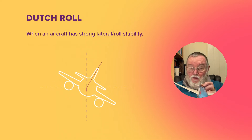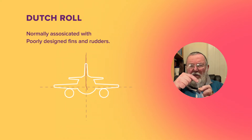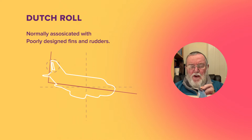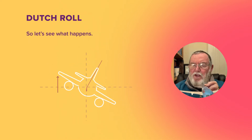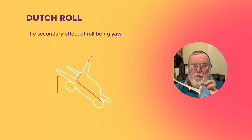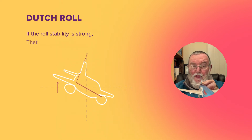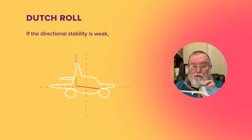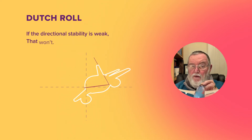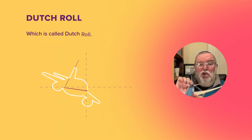Dutch roll is when an aircraft has strong lateral roll stability but weak directional stability, normally associated with poorly designed fins and rudders. If I get a disturbance in roll which puts that wing up, the secondary effect of roll being yaw means I'll start to yaw and roll together. If the roll stability is strong that will quickly recover, but if the directional stability is weak it won't, and what the aircraft sets up is a motion like that, which is called dutch roll.